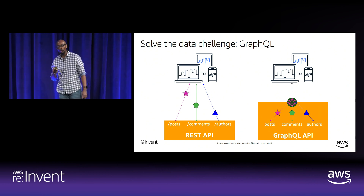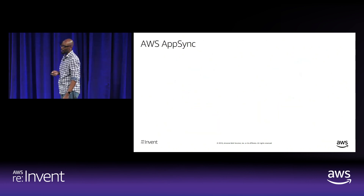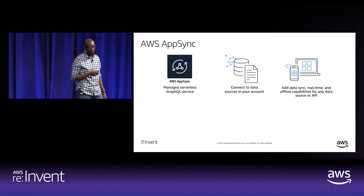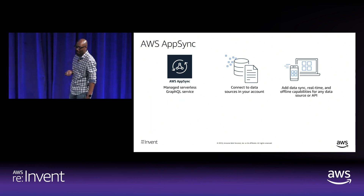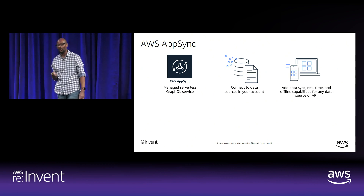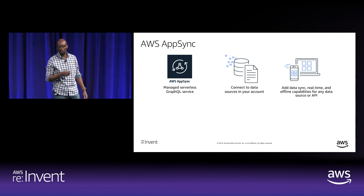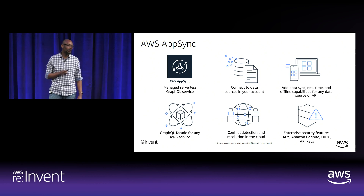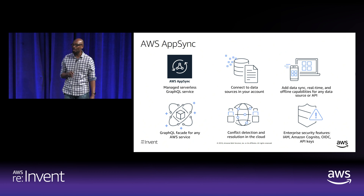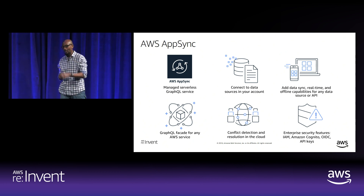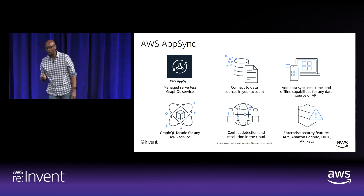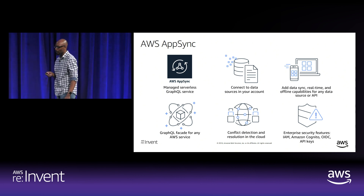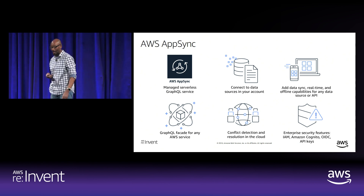Typically, when you talk about using GraphQL, that also means having to implement a GraphQL server. But we don't want to have to deal with servers. This is where AWS AppSync comes in. AWS AppSync is a fully managed serverless GraphQL service that you can launch to make use of GraphQL capabilities. It allows you to connect to data sources in your account — as we saw in the demo, you can connect to multiple data sources using a single endpoint. It implements functionalities such as data sync, real-time, and offline features, and is built using enterprise security best practices.